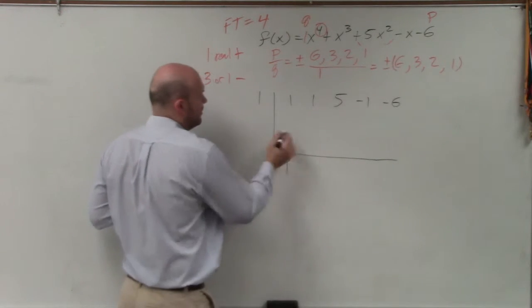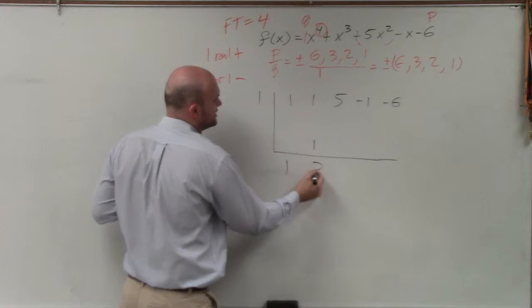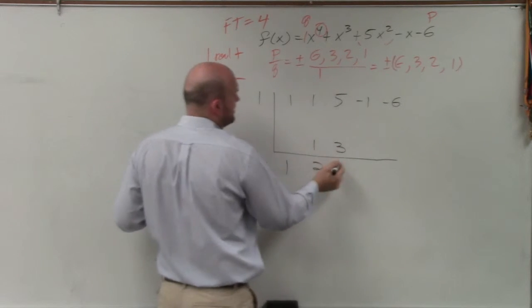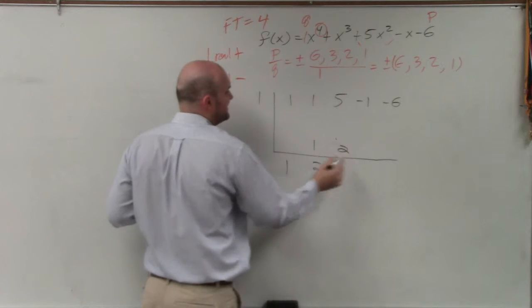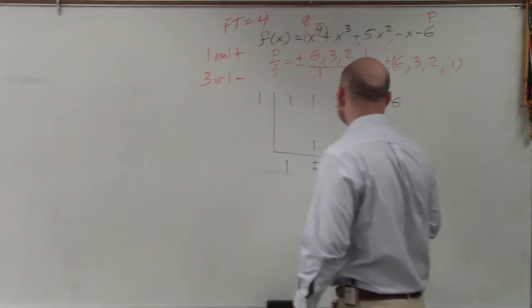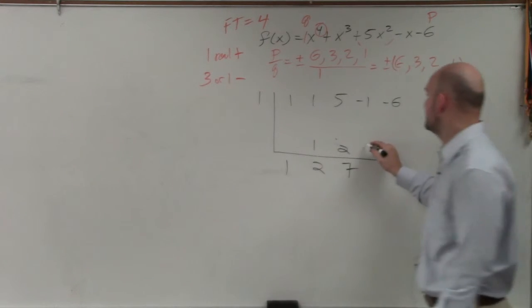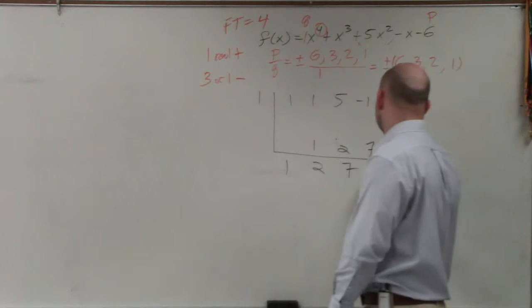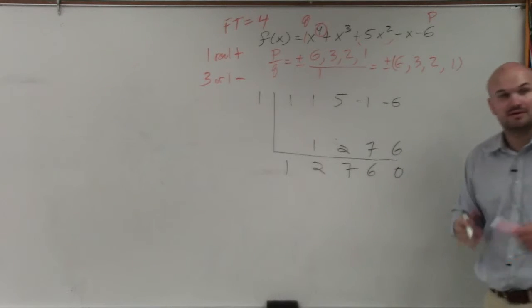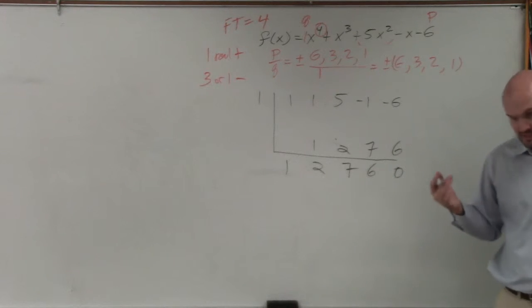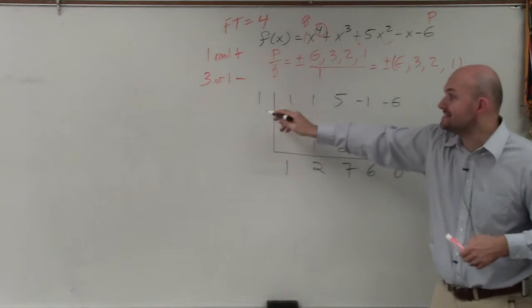Bring down the 1. 1 times 1 is 1. 1 plus 1 is 2. 2 times 1 is 3. 5 plus or 2 times 1 is 2. 5 plus 2 is 7. 7 times 1 is 7. Negative 1 plus 7 is 6. 6 times 1 is 6, gives you 0. So does it work? Yes, it is. That means 1 is a 0.